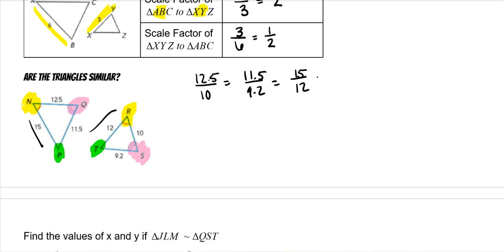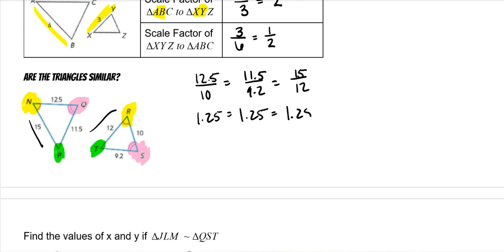All three ratios equal 1.25, so since all three are the same, yes, the triangles are similar.